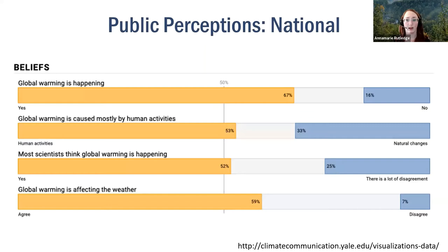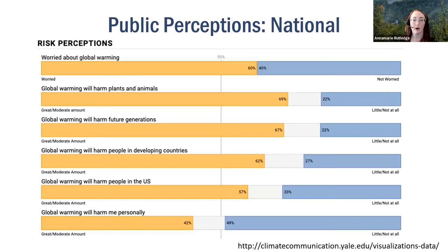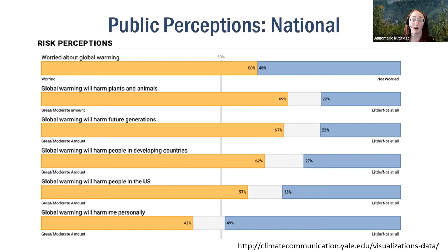This is obviously a national view, but you can go to the website in the bottom right corner and view perceptions by state, metro area, congressional district, or by county to look into specific beliefs in your project areas. Looking at risk perceptions, this is where perceptions really differ. About 40% say they're not worried about global warming, and nearly half believe global warming will not harm them personally. A third don't believe it will harm people in the US. One of the most interesting points is that many don't believe global warming will harm them personally — something to keep in mind while framing your communication strategies.